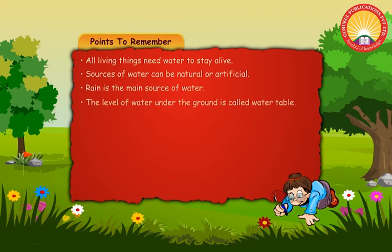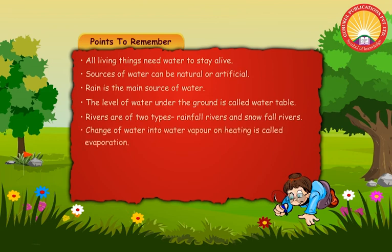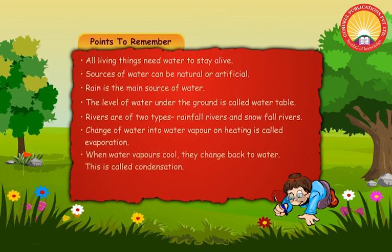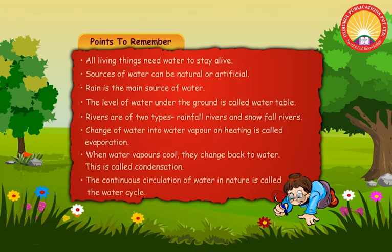The level of water under the ground is called the water table. Rivers are of two types: rain-fed rivers and snow-fed rivers. Change of water into water vapour on heating is called evaporation. When water vapour cools, it changes back to water — this is called condensation. The continuous circulation of water in nature is called the water cycle.